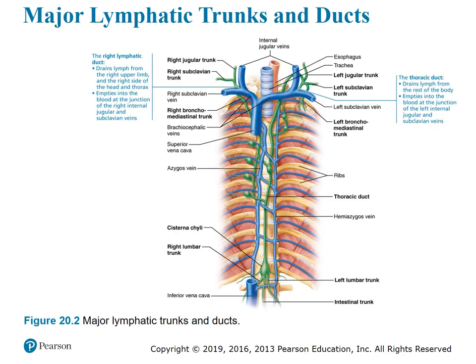Figure 20.2 shows the major lymphatic trunks and ducts. You can see the left and right lumbar trunks, the intestinal trunk, the thoracic duct, the left and right bronchomediastinal trunks, the left and right subclavian trunks, and the left and right jugular trunks emptying close to the veins. The right lymphatic duct drains lymph from the right upper limb and the right side of the head and thorax, emptying into the blood at the junction of the right internal jugular and subclavian veins. The thoracic duct drains lymph from the rest of the body and empties into the blood at the junction of the left internal jugular and subclavian veins.